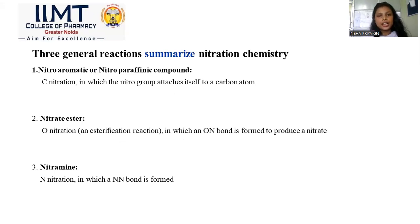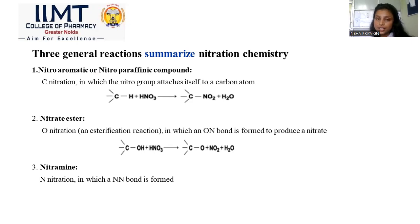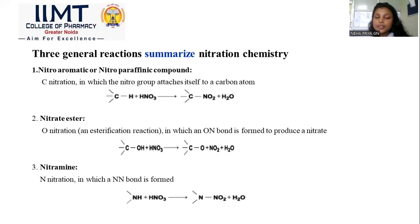There are three general reactions that summarize nitration chemistry. The first is C-nitration, forming nitro aromatic or nitro paraffinic compounds, where the nitro group attaches to a carbon atom: CH + HNO3 → C-NO2 + H2O. The second is O-nitration, forming nitrate esters via esterification, creating an O–N bond: C-OH + HNO3 → C-O-NO2 + H2O. The third is N-nitration, forming nitramines with an N–N bond: NH + HNO3 → N-NO2 + H2O.